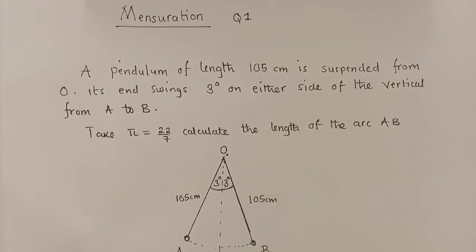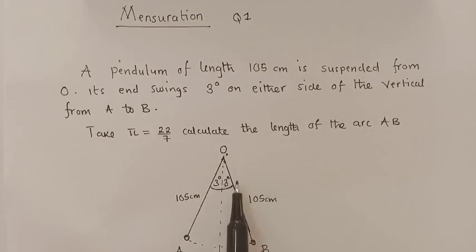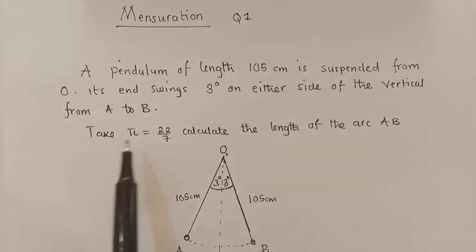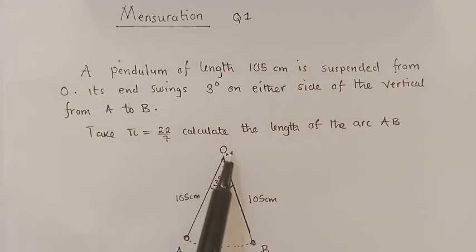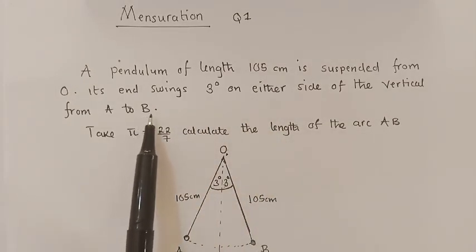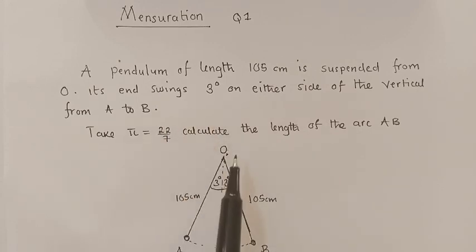Welcome to my YouTube channel, this is Chamber Jacob. In today's video we'll try to answer one question in mensuration. We'll call it question one. A pendulum of length 105 centimeters is suspended from O. Its end swings three degrees